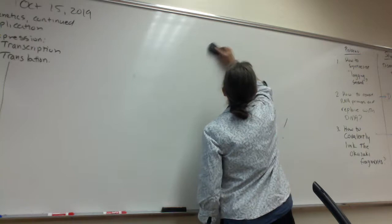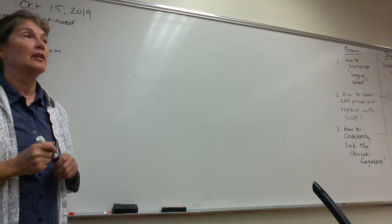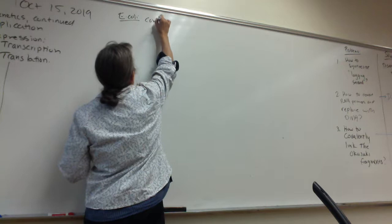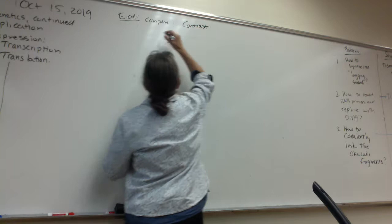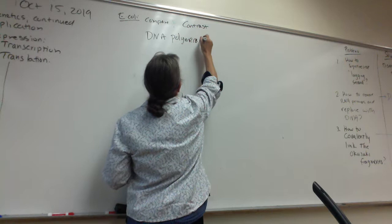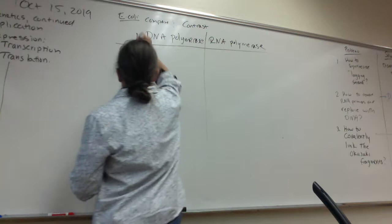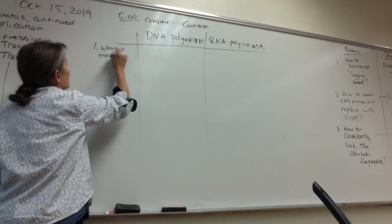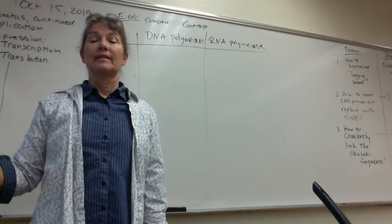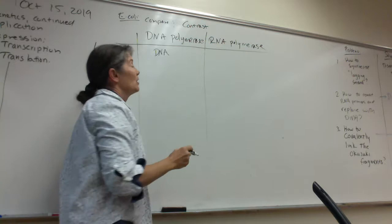This is going to be a short answer question on lecture exam 2. In E. coli, we want to compare and contrast DNA polymerase to RNA polymerase. First — what is synthesized? DNA polymerase makes single-strand DNA complementary to the template. RNA polymerase makes RNA. What's the template? For DNA polymerase it's single-strand DNA, and for RNA polymerase the template is also single-strand DNA — primase was a special example of RNA polymerase using single-strand DNA as its template.